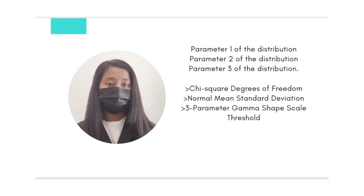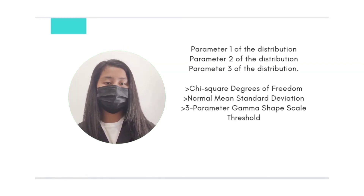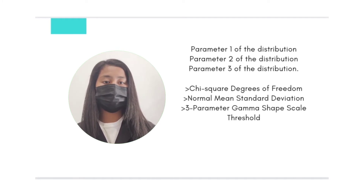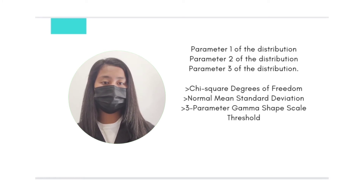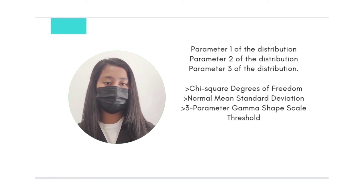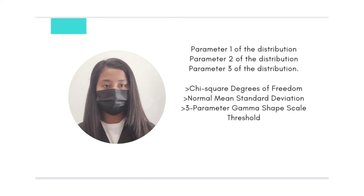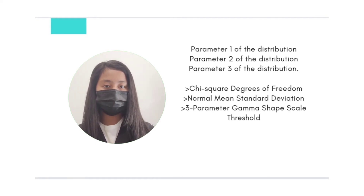The three parameters of a distribution are Parameter 1, Parameter 2, and Parameter 3. For the chi-square distribution, the parameter is degrees of freedom. For the normal distribution, the parameters are mean and standard deviation. For the gamma distribution, the parameters are shape, scale, and threshold.